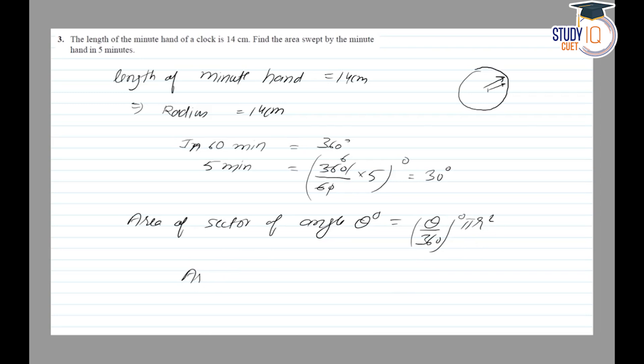So area of sector of 30 degree will be 30 divided by 360 degree into pi, and radius we have is 14 squared. So this becomes pi into 14 square divided by 12. Finally, this comes out to 154 divided by 3 cm square.